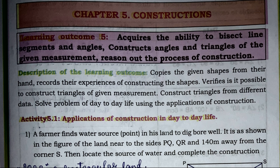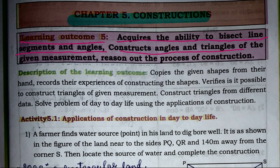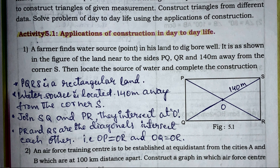Hi, hello, welcome to Education Monode channel. Today I'm going to explain Chapter 5: Construction. This is a very beautiful chapter in mathematics. The learning outcome: we will start with learning outcome 5 — acquires the ability to bisect line segments and angles, constructs angles and triangles of given measurements, and reasons out the process of construction. I will start directly with Activity 5.1: applications of construction in day-to-day life.